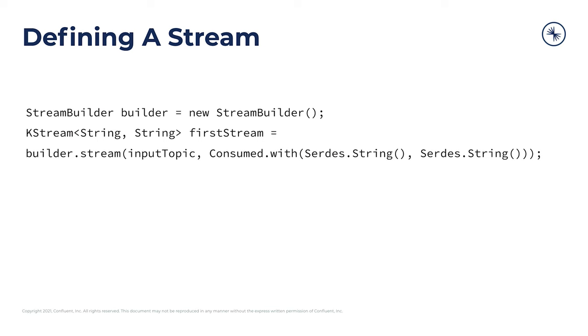The Kafka Streams topology is going to be defined using this StreamBuilder class. So to define a stream, you're going to first create an instance of this StreamBuilder class. Then you can use this builder to create a KStream, which is just the Kafka Streams abstraction over the event stream and the fundamental building unit of Kafka Streams. And you can create this KStream using the builder.stream.